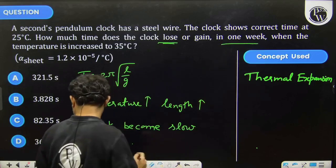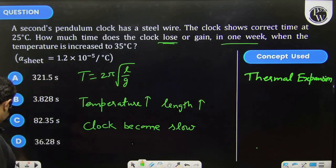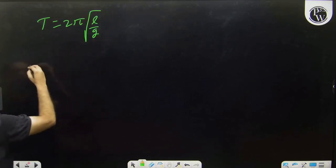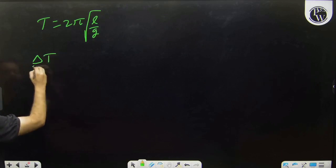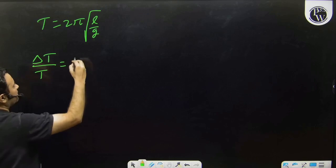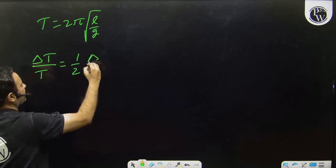So, T = 2π√(L/g). We can write this as ΔT/T equals L to the power half, which is (1/2)(ΔL/L).